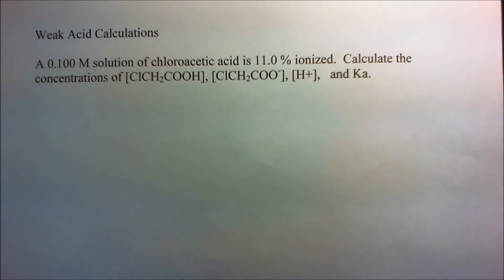We have a 0.1 molar solution of chloroacetic acid and we're told that it is 11.0% ionized. We want to calculate the concentrations of all the components and get a Ka after it's all done.